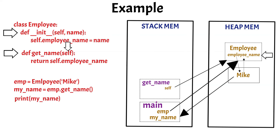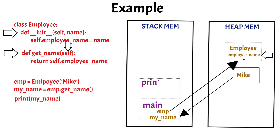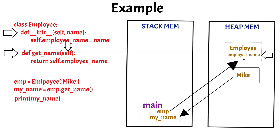Now if we want to print the variable my_name, then a new stack for the print function is created in the stack memory, and the value of the my_name variable is passed as an argument. This will print the name for us in the console. Once the print function is executed, the stack created for the print function is removed from the stack. This is how various objects and their members are created and mapped in the stack memory and heap memory.